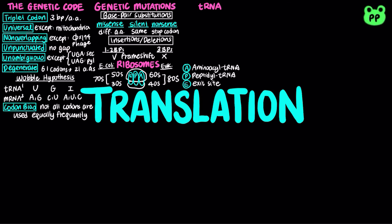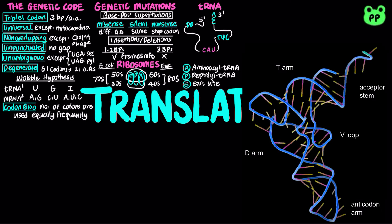tRNA or transfer RNAs serve as adapters in translating the language of nucleic acids into the language of proteins. A tRNA molecule consists of a single RNA strand of about 80 nucleotides long. It looks like a cloverleaf when flattened into a single plane. Due to hydrogen bonds, tRNA actually twists and folds into a roughly L-shaped 3D molecule.